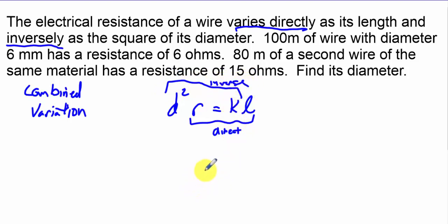What I will do is say d squared R over L is equal to K, and then write that proportionally. To solve this, I have 100 meters of wire - that's a length - diameter is 6 and resistance is also 6. That's going to equal 80 meters, and I'm looking for the diameter, and I have 15 ohms.